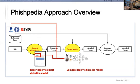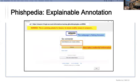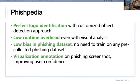Following Fish2, we agreed that logo carries the identity of a website better. Different from Fish2, we use a deep learning object detection model to first report the position of the logo precisely. Then we directly compare logos via a deep learning Siamese model. In addition, our system can provide explainable predictions — we are able to visualize and debug which brand is being targeted and where credential information is being stolen. The contributions of Fishpedia include: perfect logo identification with a customized object detection approach, low runtime overhead even with visual analysis, no bias in phishing datasets since there is no need to train on pre-collected phishing data, and visual annotation on phishing screenshots which improves user confidence in model predictions.